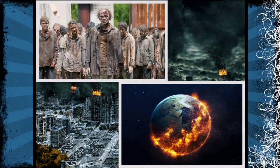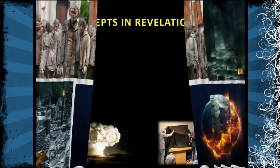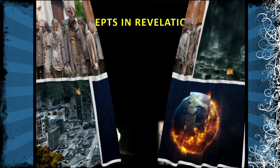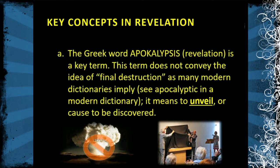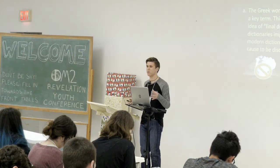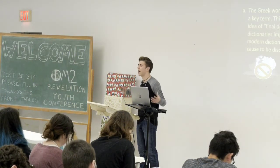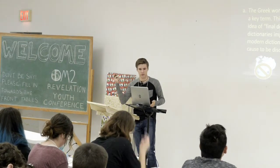In Greek, the word apocalypsis had a different meaning. It's morphed over time. The original meaning did not convey a final destruction, but rather the unveiling of a curtain — to lift something, to show the future. The term does not convey the idea of final destruction, as many modern dictionaries imply. It means to unveil or to cause to be discovered. In Revelation, we're unveiling what is going to happen in the future.